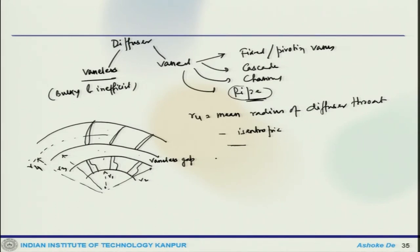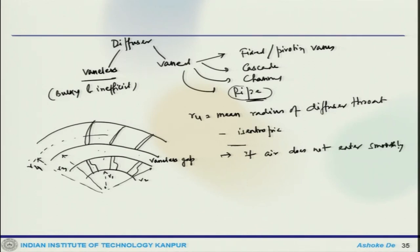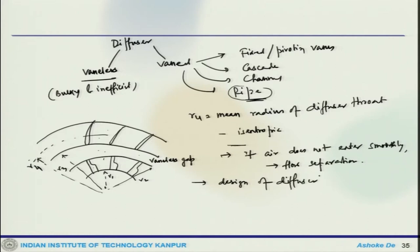Air will pass through these passages and finally we get the proper pressure rise. If the air does not enter smoothly, there would be flow separation, and because of the flow separation there would be performance degradation in the compressor. So, the design of the diffuser becomes important.